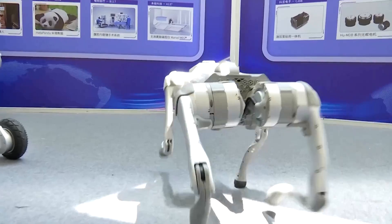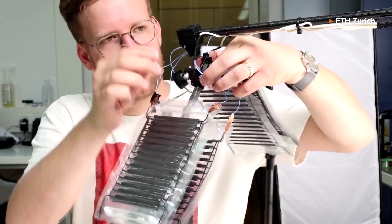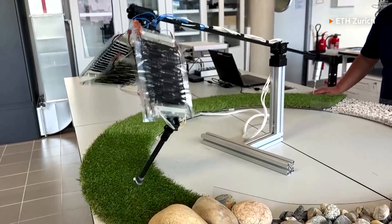Traditional robots typically employ motors to power their movements. Instead, this robotic leg uses artificial electro-hydraulic muscles to mimic the action of a human leg.